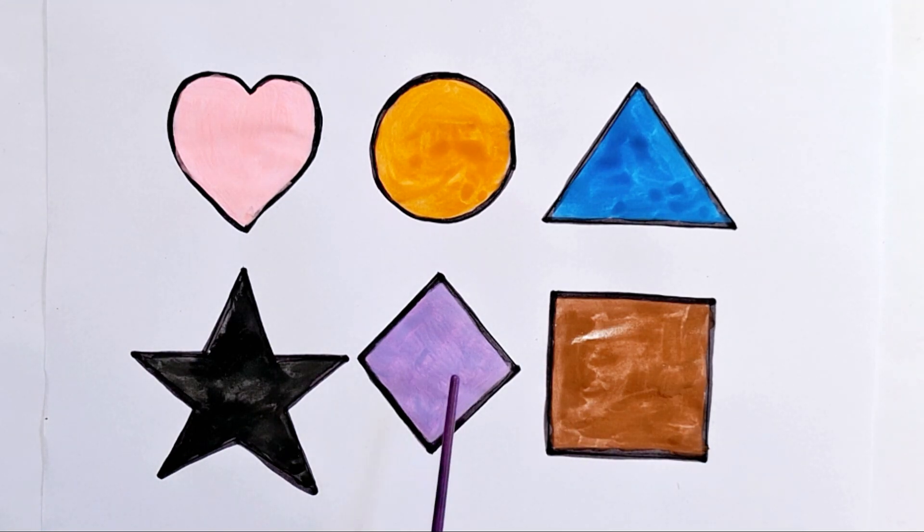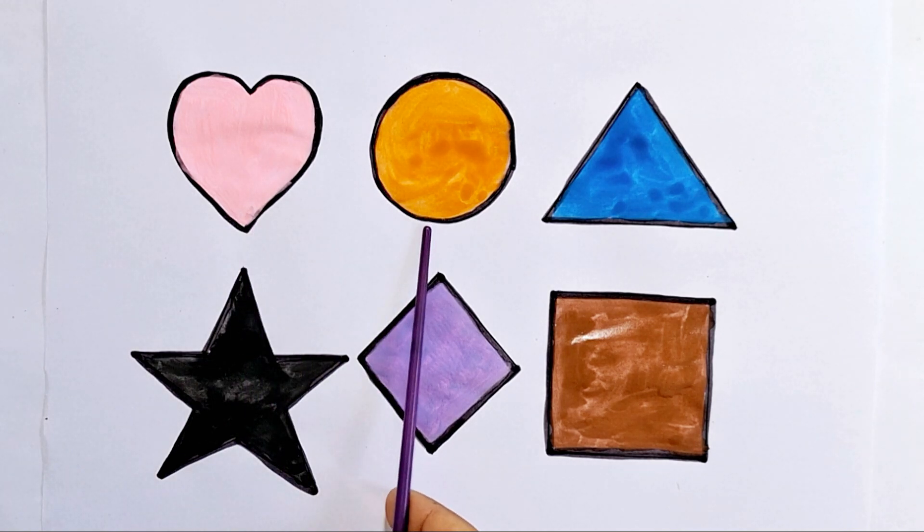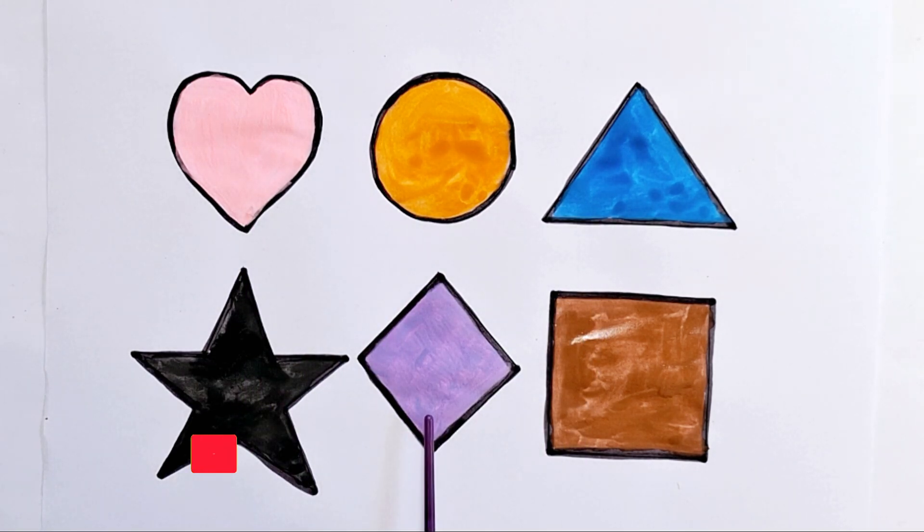Let's again learn 2D shapes name. This is heart. This is circle. This is triangle. This is star. This is rhombus. This is square. If you like this video, please don't forget to like and subscribe.